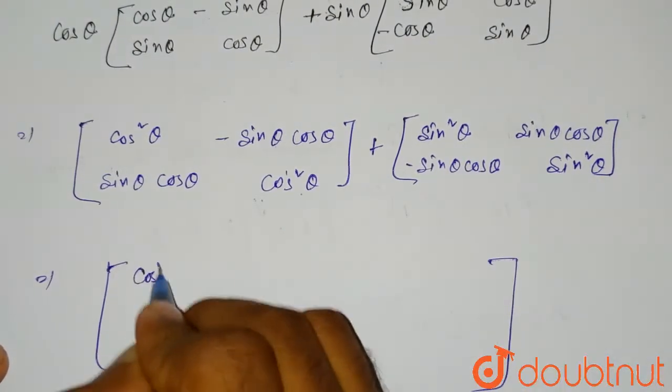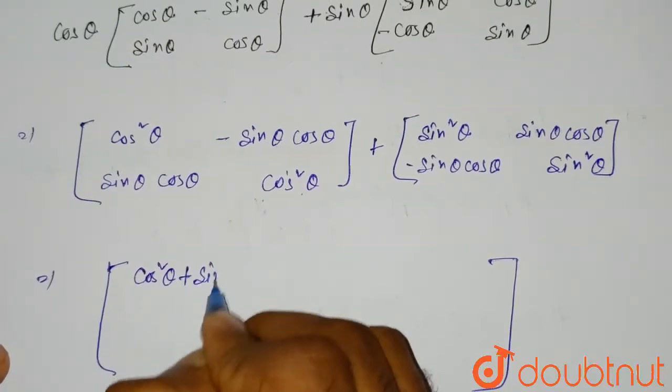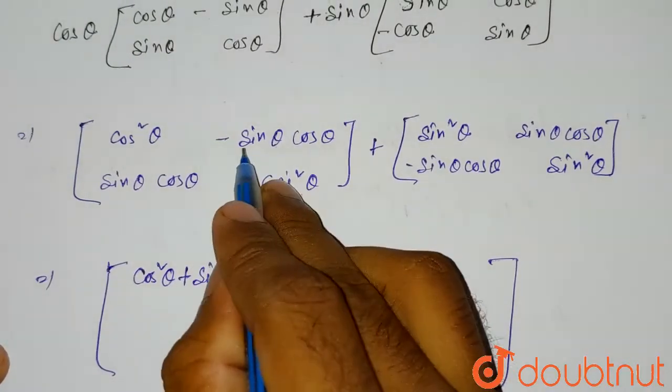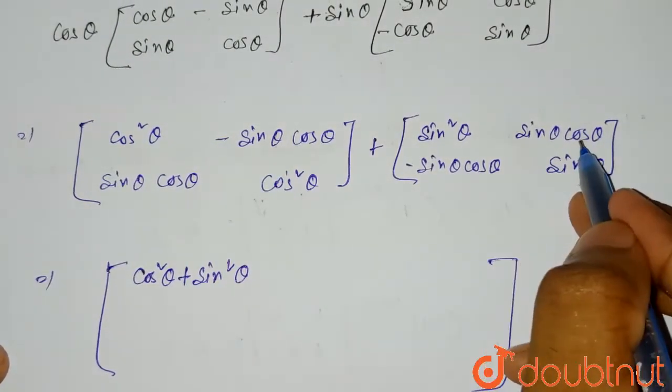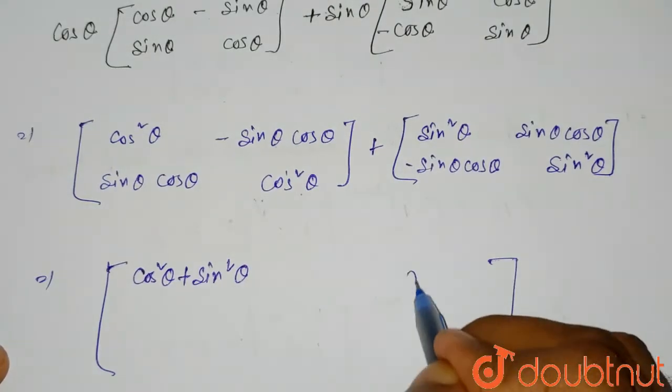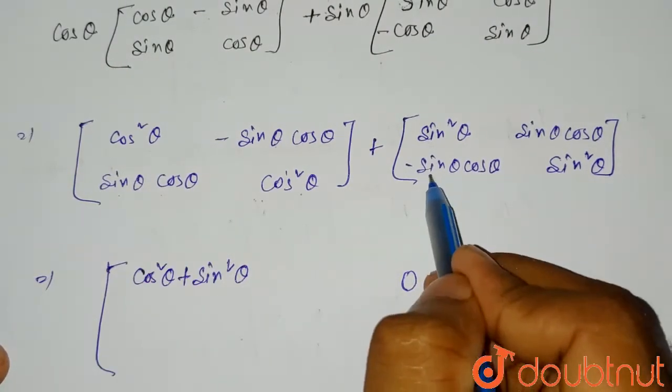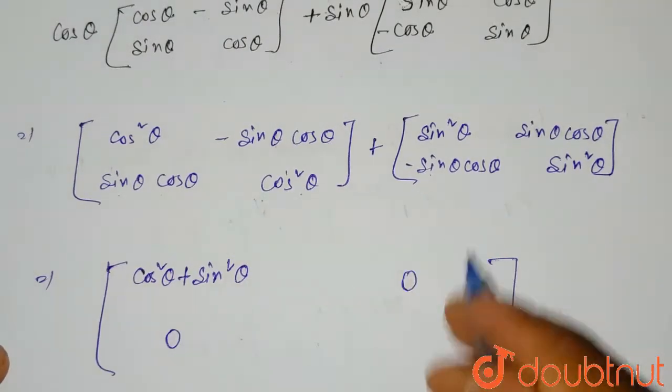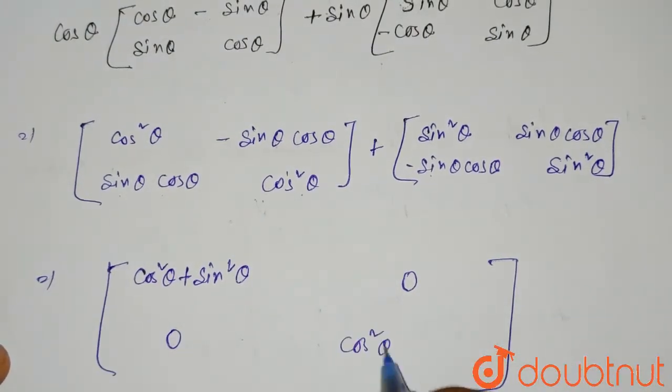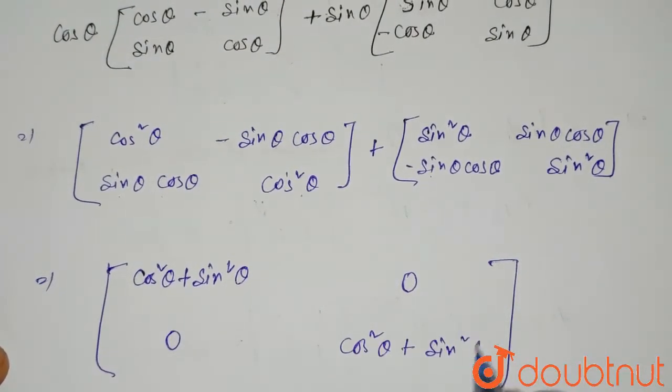Cos square theta plus sin square theta. The second one, minus sin theta cos theta plus sin theta cos theta, that means they will be cancelled, so ultimately the answer will be zero. Similarly for the third element, sin theta cos theta will be added with minus sin theta cos theta. Again they will be zero. And here cos square theta again plus sin square theta.